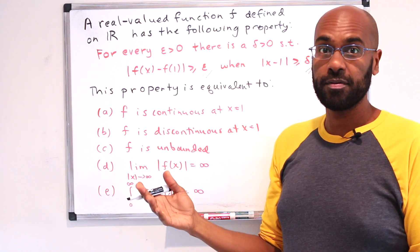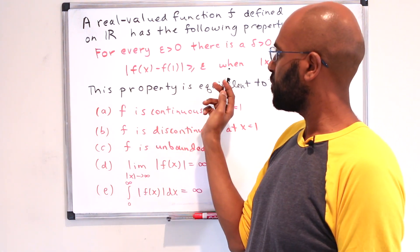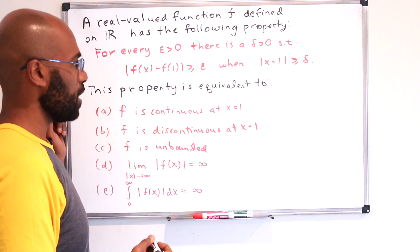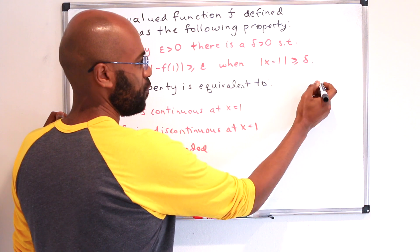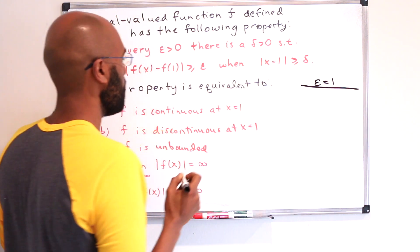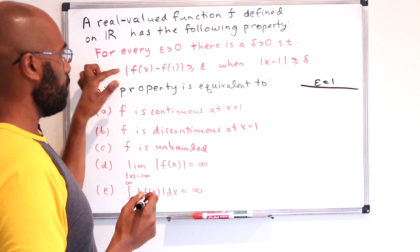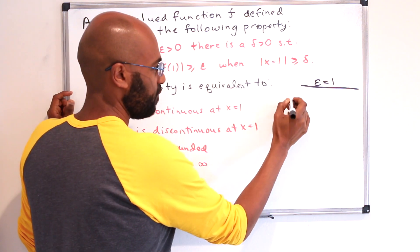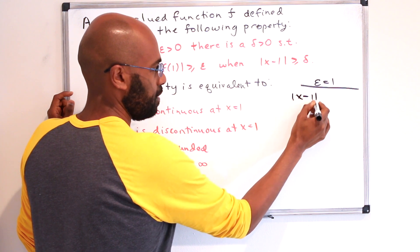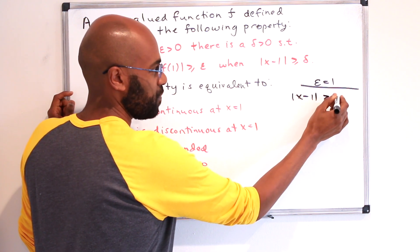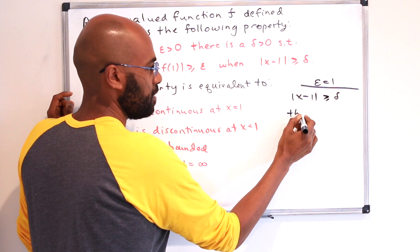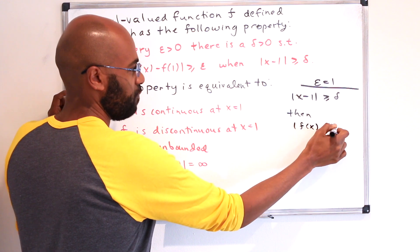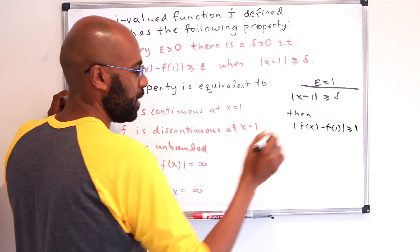So we're going to do that with this particular statement, and then get a sense of what this actually implies about the function f itself. Okay, so let's play around with this for a bit, and I want to actually pick values for epsilon and delta to get a sense of what's going on. So let's start with the value ε = 1. Alright, so what this is saying is that when I pick epsilon to be 1, there is a delta for which when |x - 1| ≥ δ, then |f(x) - f(1)| ≥ 1.